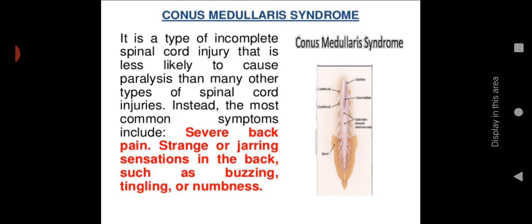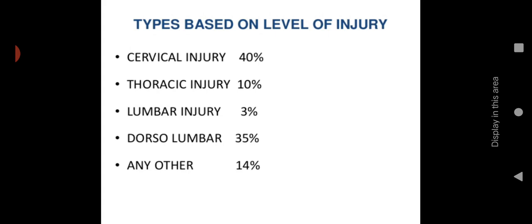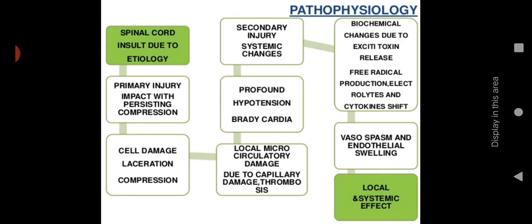Based on level of injury: cervical injuries account for about 40 percent, thoracic injuries for only 10 percent, lumbar injuries are very rare at 3 percent, dorso-lumbar or L4-L5 region accounts for 35 percent, and other injuries make up 14 percent.